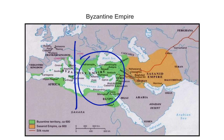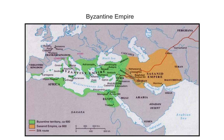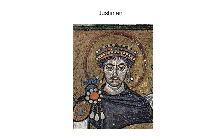Going back to the map, Justinian is going to be the one that sends Belisarius — who you read about — back to the west to try to recapture Rome and other parts of North Africa, into southern Spain. He does this, and it is somewhat successful, though it's kind of a constant struggle, and eventually they're going to get out of there.